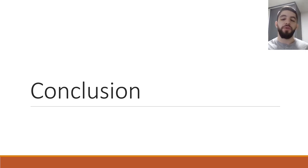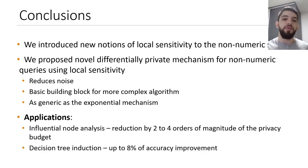So here are the conclusions of our work. We introduced new notions of local sensitivity to the non-numeric setting. We proposed a novel differentially private mechanism for non-numeric queries using local sensitivity. This approach reduces noise, it is a basic building block for a more complex algorithm, and it is as generic as the exponential mechanism. So anywhere where the exponential mechanism is used, we can also use our approach, the local dampening mechanism.